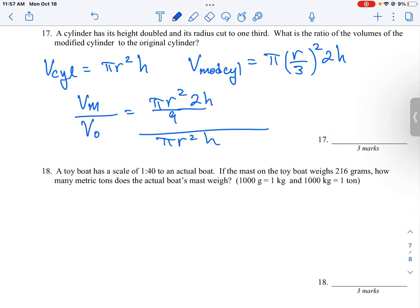So what you're going to see here is that the pis will cancel, the r squareds will cancel, and the h's will cancel. So our ratio here is just going to be 2 over 9 over 1. So our ratio compared, modified to original, is just going to be 2 ninths divided by 1, which is 2 over 9.